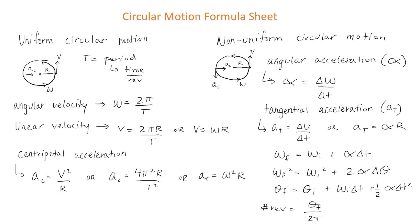When answering non-uniform circular motion questions, you can use these equations here, which are very similar to the kinematic equation. And finally, if you're asked to find the number of revolutions that the object turns when speeding up or slowing down, you can use this equation, which says that the number of revolutions is equal to the final angular position divided by 2 pi.